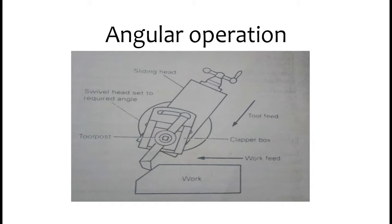The angular operation is similar to the vertical operation because the sliding head is also swiveled and the machine cuts the material or workpiece at an angle.